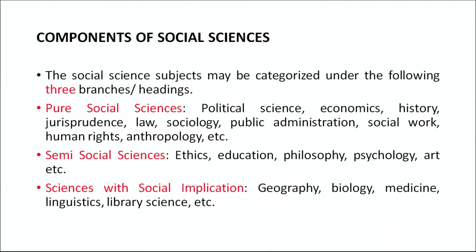The third category is sciences with social implications. Examples are geography, biology, medicine, linguistics, library sciences, etc. All these subjects have a great implication for social life, but at the same time they are not directly social sciences. So we have seen three categories: pure social science, semi-social science, and sciences with social implication.